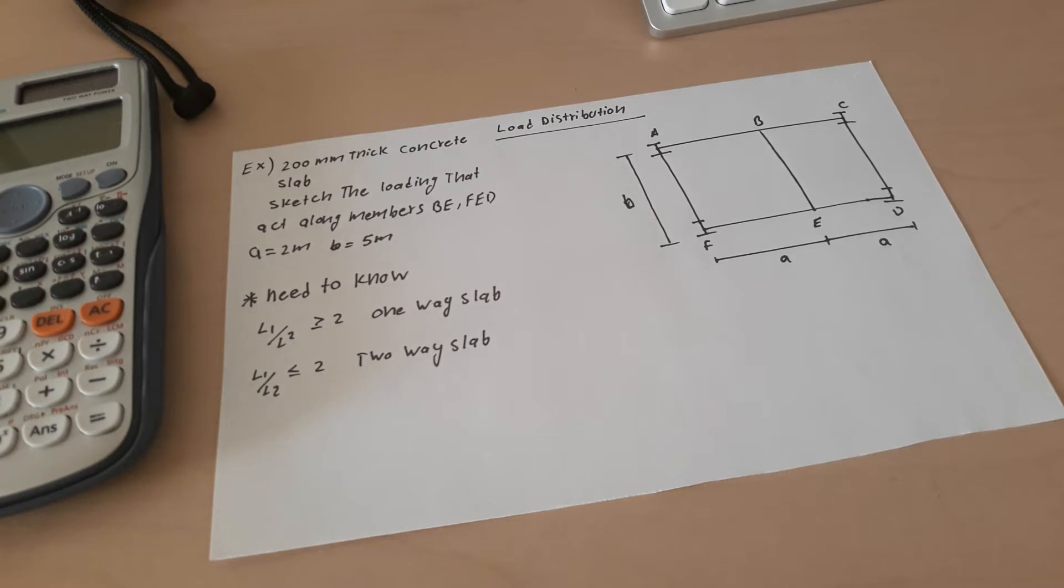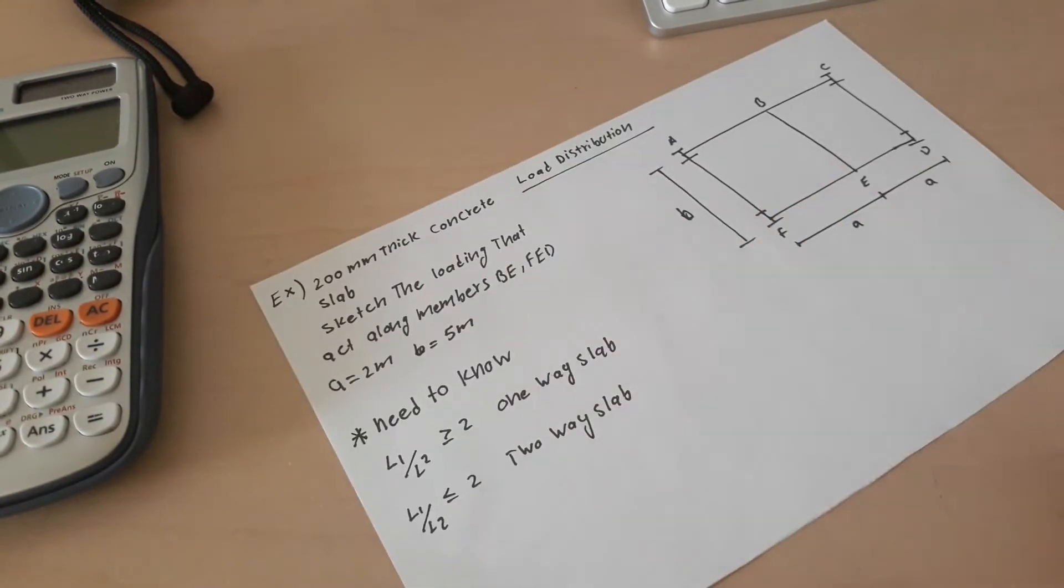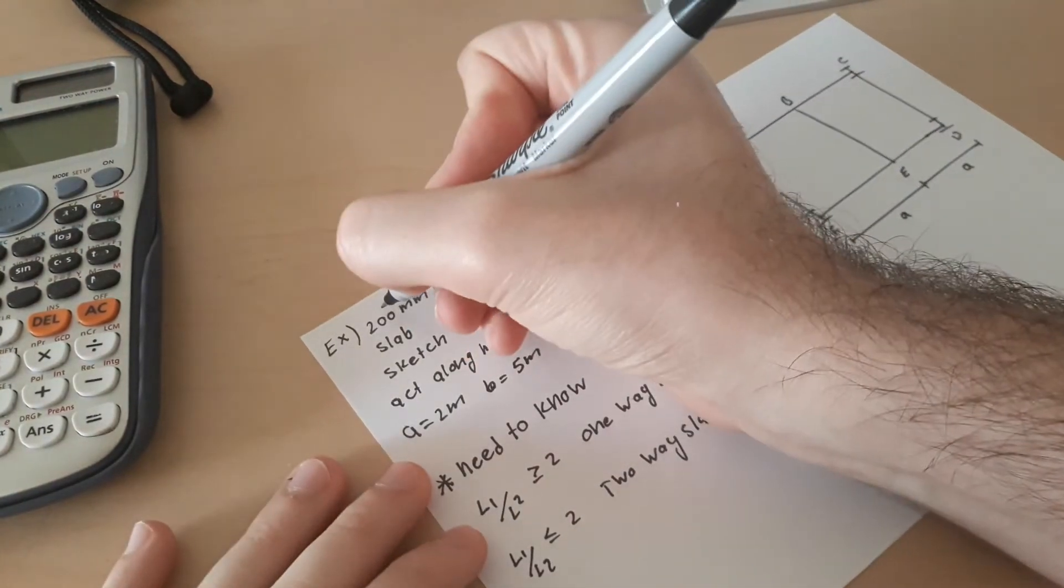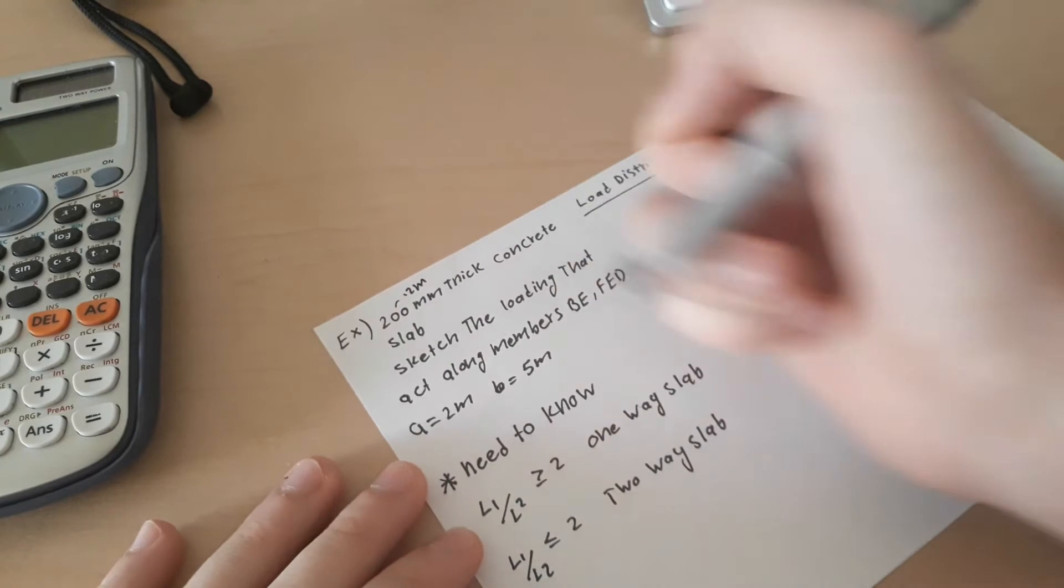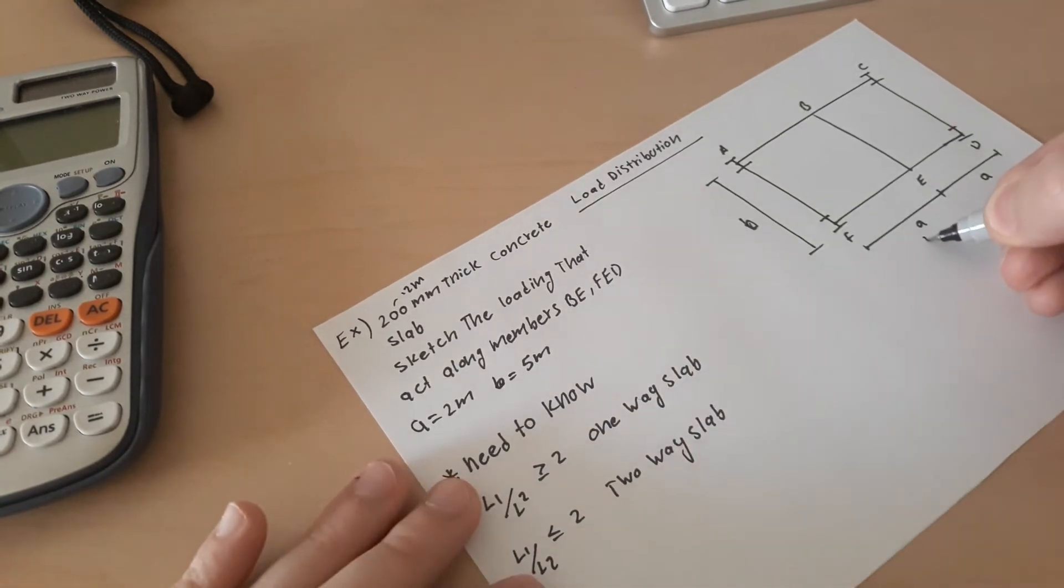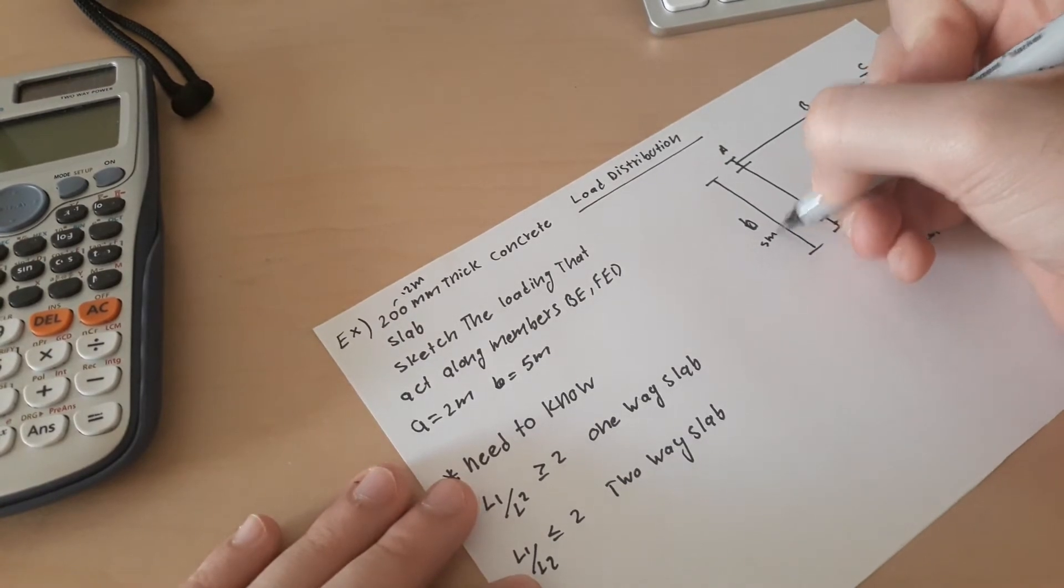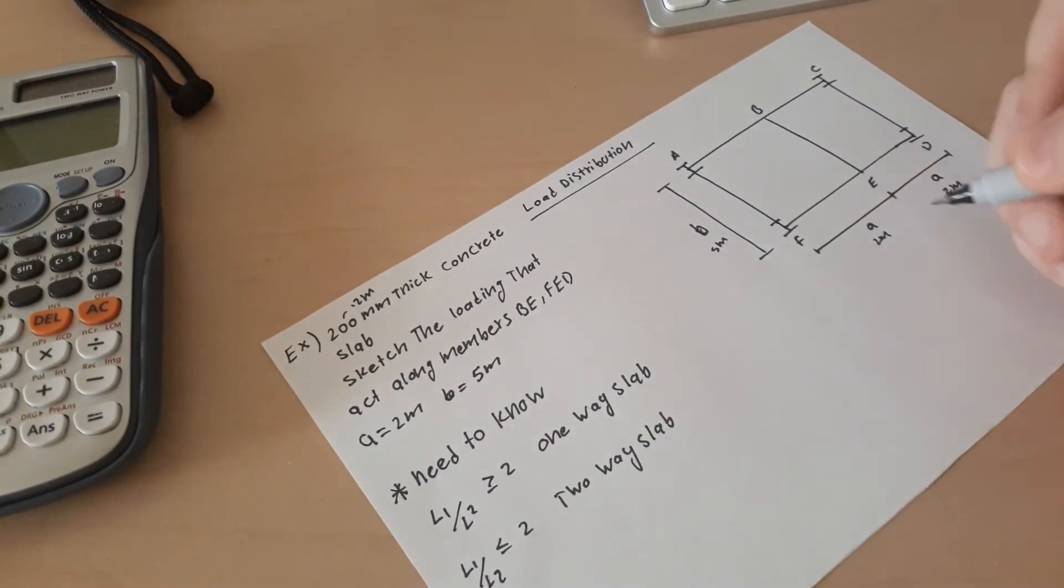Take a equal to 2 meters, b equal to 5 meters. So right here we know that it's 200 millimeter concrete slab, or in other words 0.2 meter. And we need to sketch the loading along members BE and FED. So a is equal to 2 meters, so we know that right here is 2 meter and 2 meter, and b equals to 5 meter.